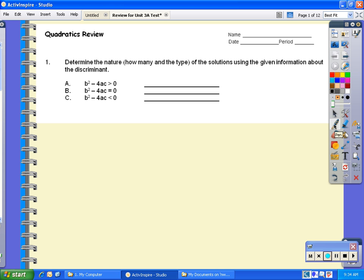This video will review numbers 1 through 5 on your quadratics review packet. Number one: determine the nature (how many and the type, meaning imaginary or real) of the solutions using the given information about the discriminant. If I know that b² - 4ac is greater than zero, that means my discriminant is positive, therefore I know that I'm going to have two real solutions.